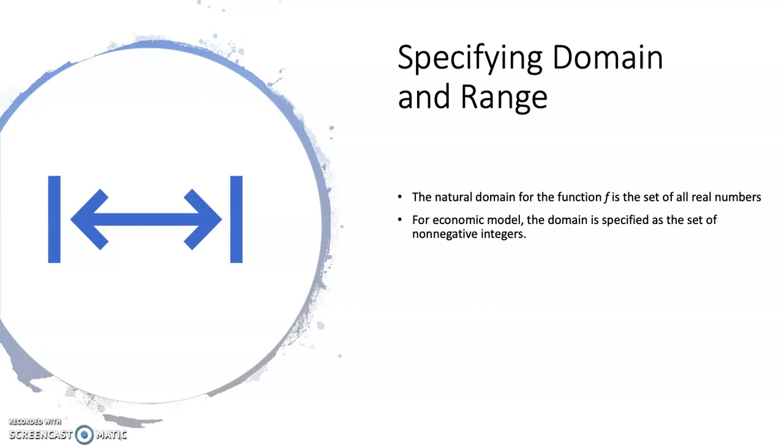Or for example, production is in hope. We don't say that the quantity produced is negative, but the quantity produced is just equal to zero. So that is why in economic model, the domain is non-negative integers. It can be zero and positive values.